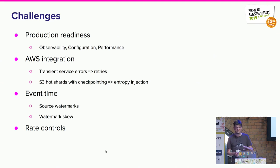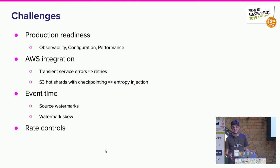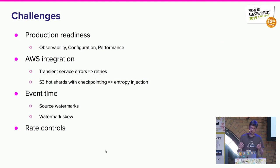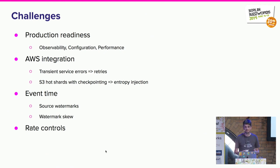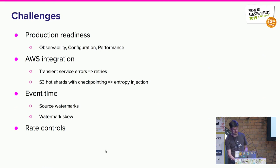Dealing with S3 for checkpointing with large state is also interesting: if you hit the same S3 shards for many subtasks, you get hotspotting. There is a workaround by augmenting the file path just to make it go over multiple shards. That change went into the last Flink release.